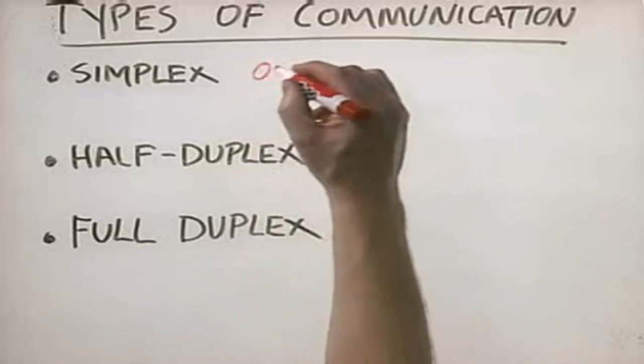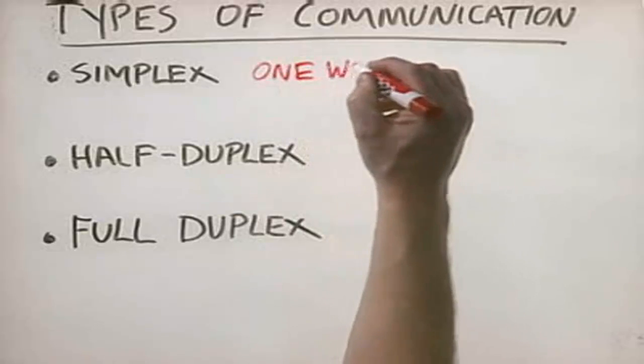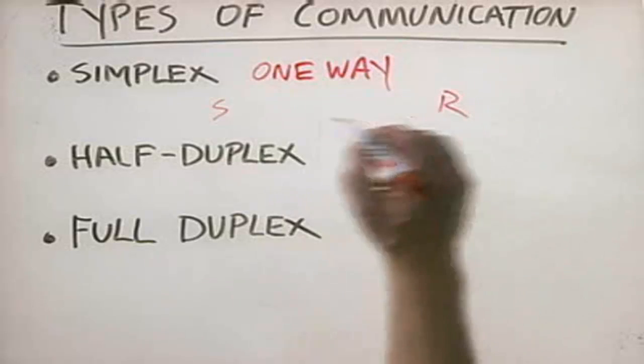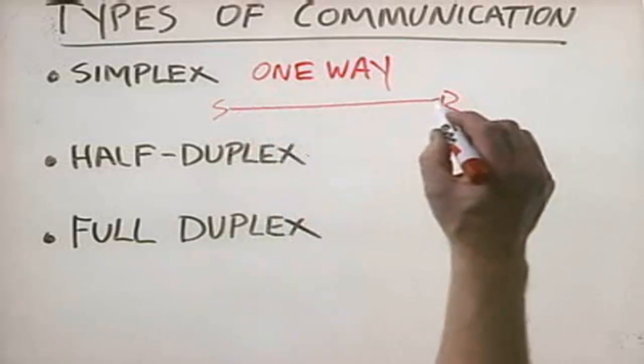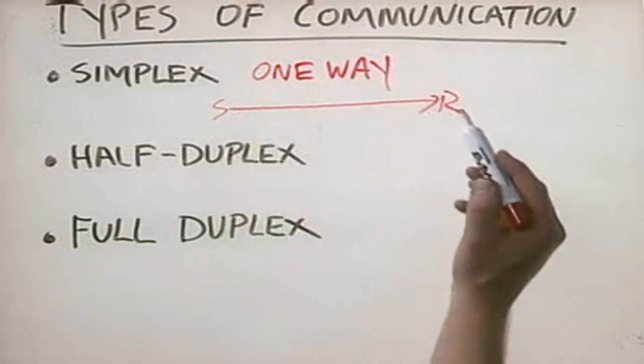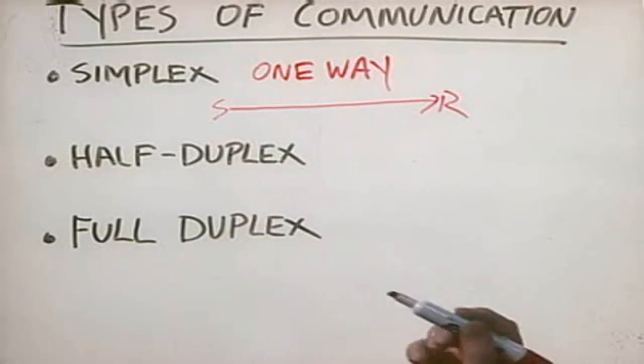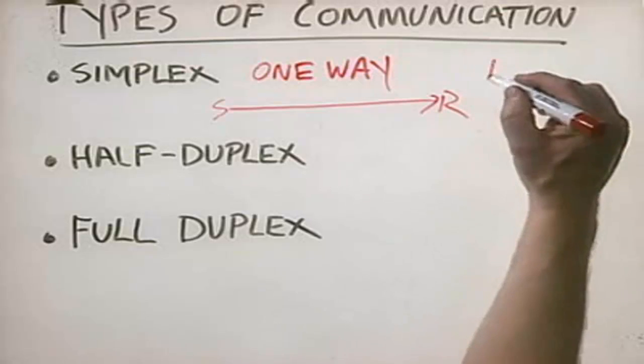Simplex communications are one way. You have a sender and you have a receiver, and the information travels in one direction and one direction only. Information does not come from the receiver back to the sender. Want a good example? Think of a PA system.